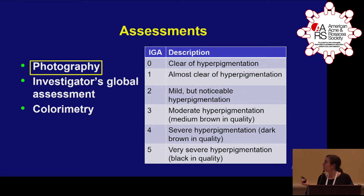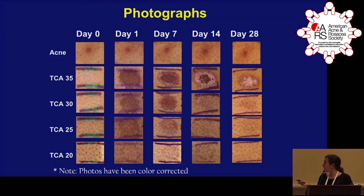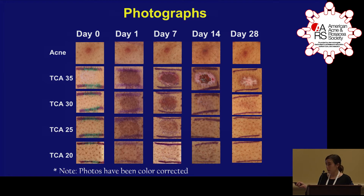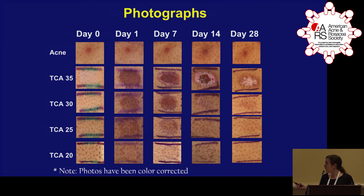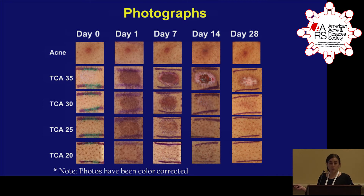As you can see here, at day 0 we identified an acne papule on the back — we looked for a papule that was very juicy and that we thought would form PIH. At that day we also applied TCA until we saw frosting, the whitest hue visible at the 35% TCA. We brought subjects back the next day and saw darkening of the TCA-induced lesions. At day 7 and day 14, at the 35% TCA concentration we saw necrosis and sloughing of the skin; however, at 30%, 25%, and 20% TCA we did not see that necrosis and sloughing.